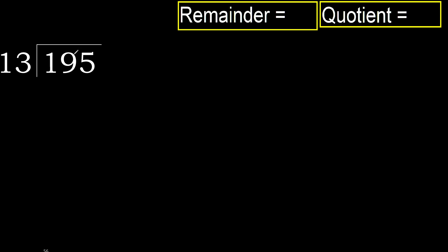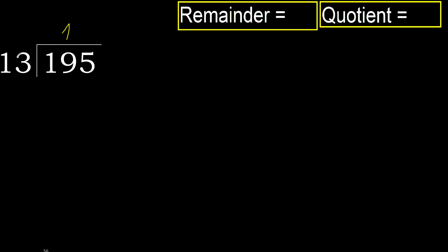195 divided by 13. 1 is less, therefore next. 19 is not less, therefore we work with 19. 13 multiplied by which number is nearest to 19 but not greater? 13 multiplied by 2 is 26, which is greater. Multiplied by 1, 13 is not greater. Ok.